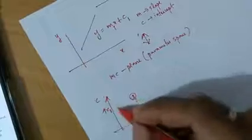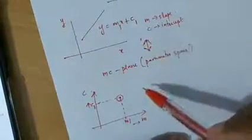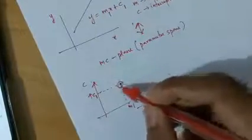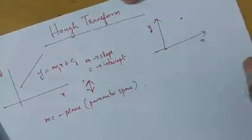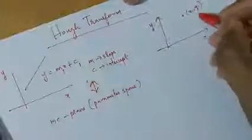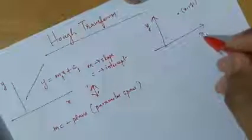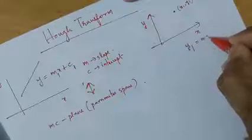It can be drawn as the point (m1, c1). So it is clear that a particular straight line in the spatial domain is mapped to a point in the parameter space. Now let's see what happens when we give a point in the XY plane and convert it into parameter space. This point is located at (x1, y1). We can write the slope-intercept form equation of a straight line passing through (x1, y1) as y1 equals m·x1 plus c.